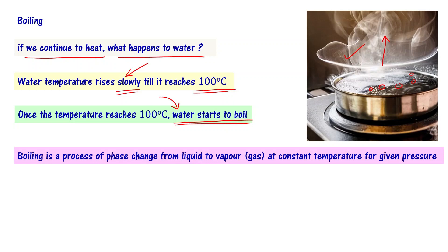Boiling is a process of phase change from liquid to vapor, or liquid to gas, at constant temperature for a given pressure. At constant temperature for a given pressure — this is important.